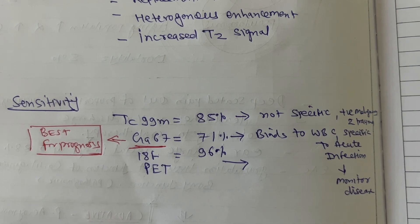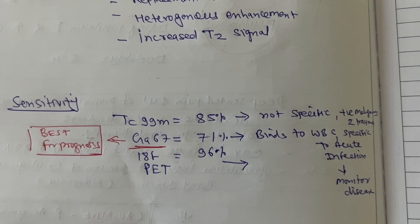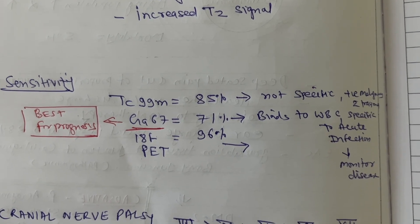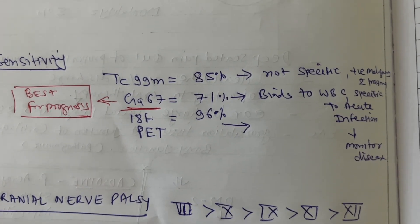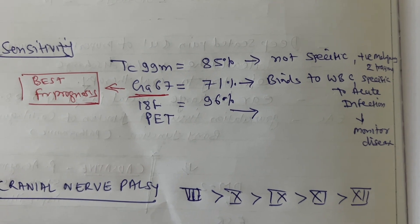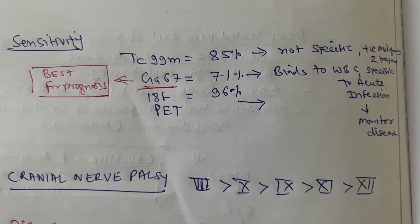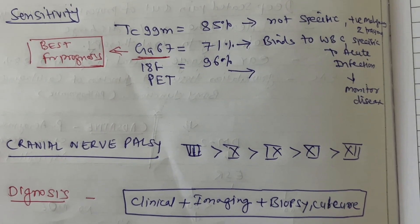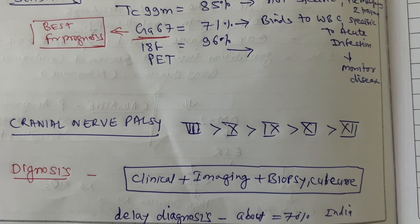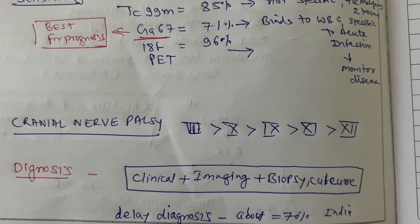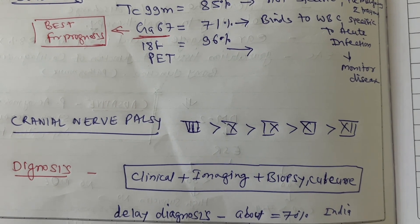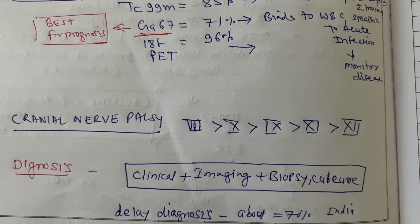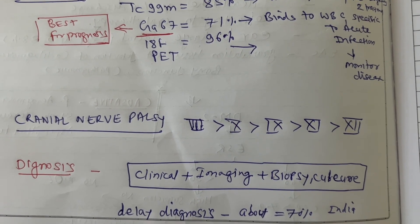For investigation, imaging mainly includes Technetium-99 scan plus PET scan, which are highly sensitive and specific. Using both together is preferred. Gallium-67 scan is mainly used for prognosis purposes and monitoring disease prognosis.